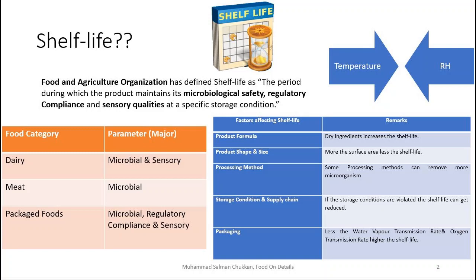For example, for a meat product, the major parameters to look at during shelf life testing would be microbial safety rather than regulatory or sensory attributes. Whereas for a packaged product, it is microbial safety, regulatory compliance, and sensory attributes. So, according to food type, the parameters are to be selected.